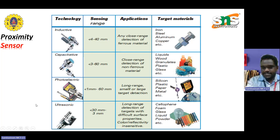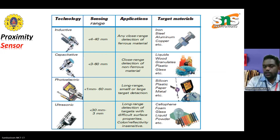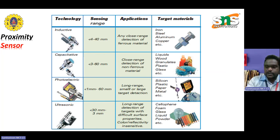The technological sensing and ranging application markets depend upon the variation that may occur. In inductive sensing, the range is less than 4 to 40 mm, mainly used for close range detection of ferrous materials. The targeted close range materials include aluminum, copper, etc. The capacitive range is less than 30 mm, used for close range detection of non-ferrous materials, liquids, wood, granules, plastics, glass, etc.